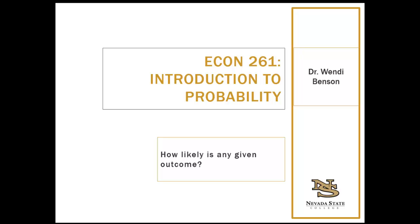To get percent chance, you simply take the probability and multiply by 100, and that gives you a percentage. Or if you want to figure out the probability based on a percent chance, you just flip that equation — take the percent chance, divide by 100, and that gives you the probability. Probability is also synonymous with proportion — the relative frequency of a specific event among all possible events.